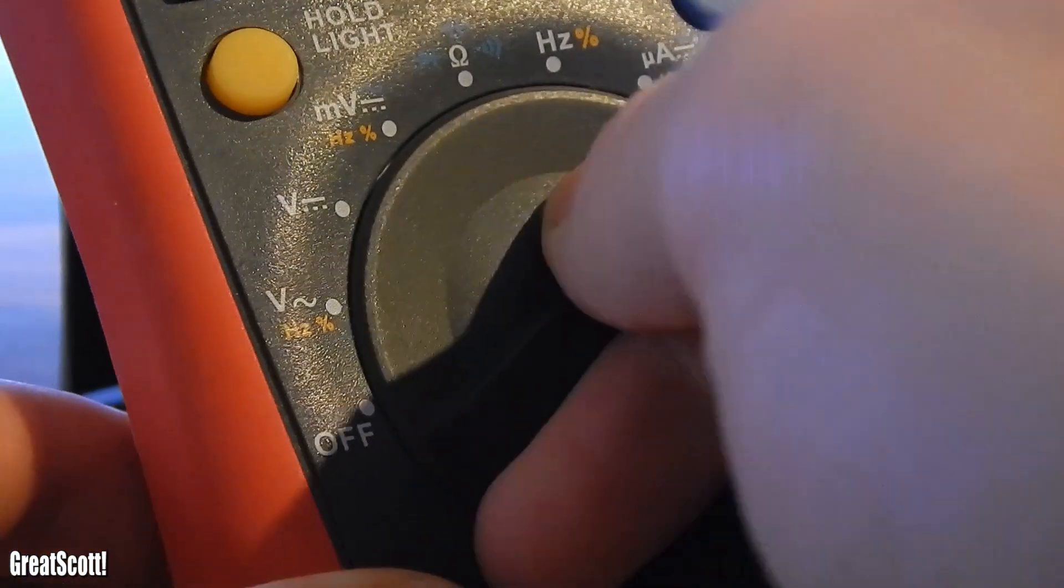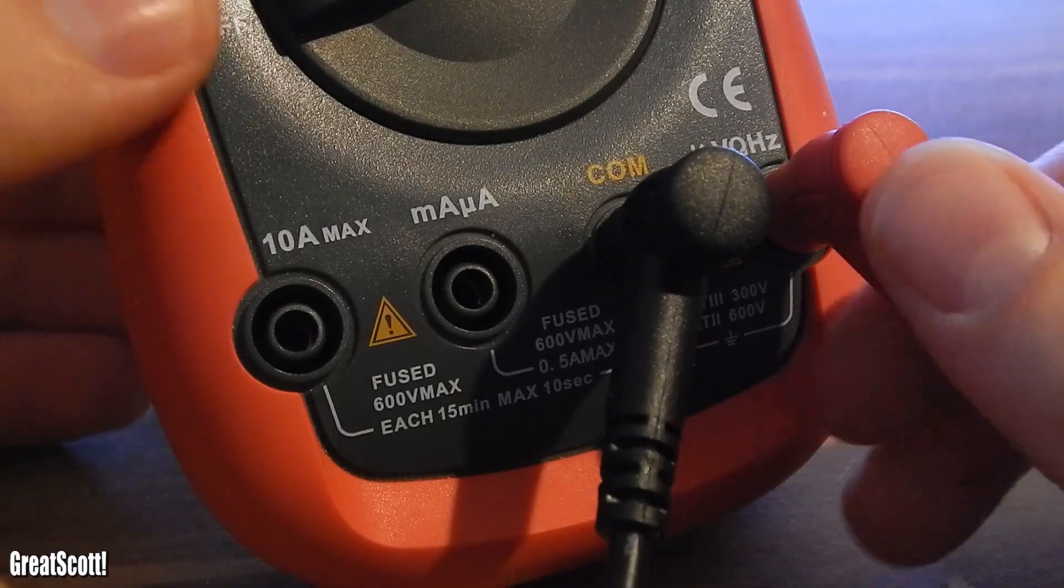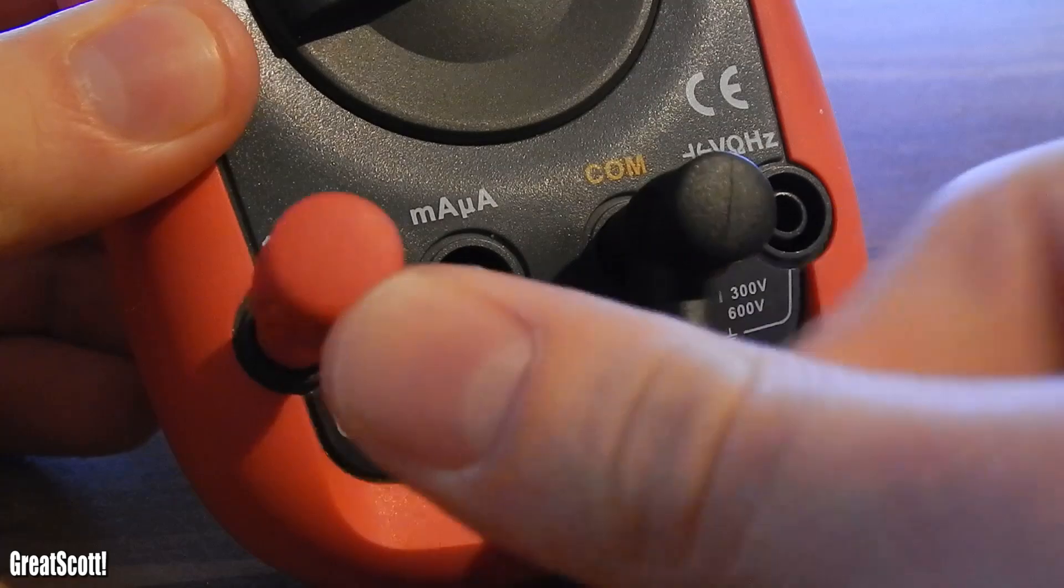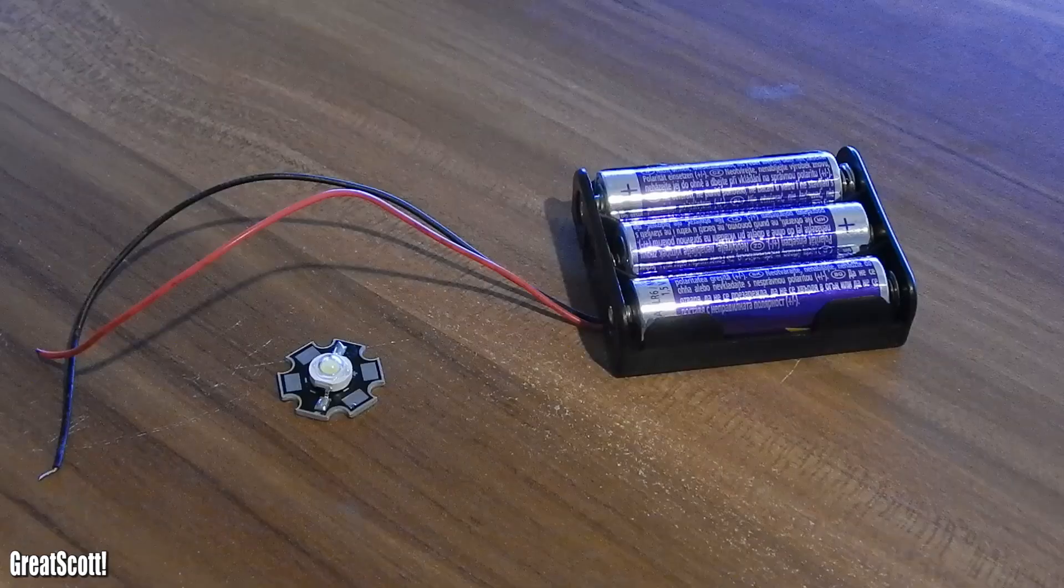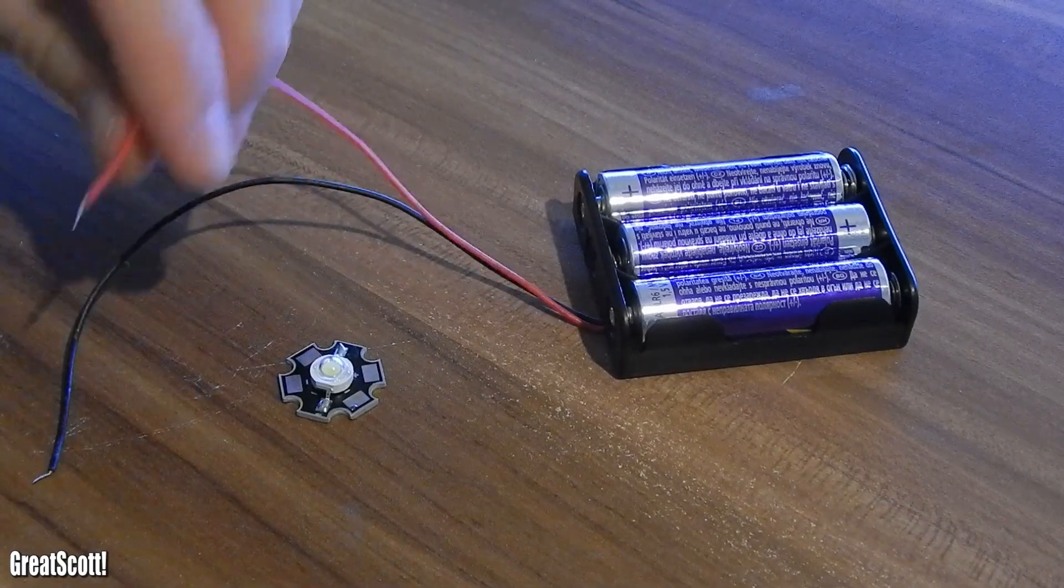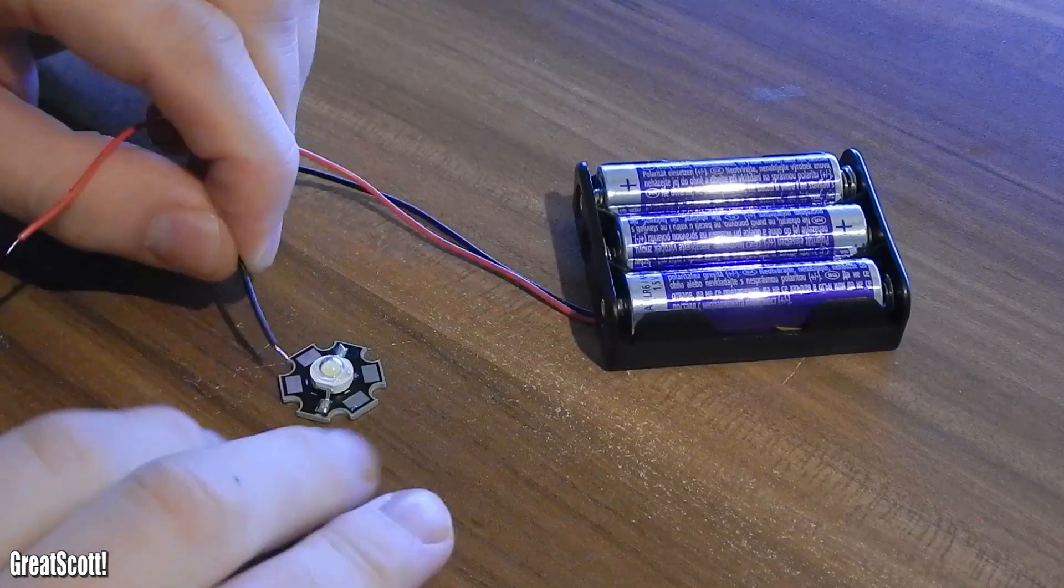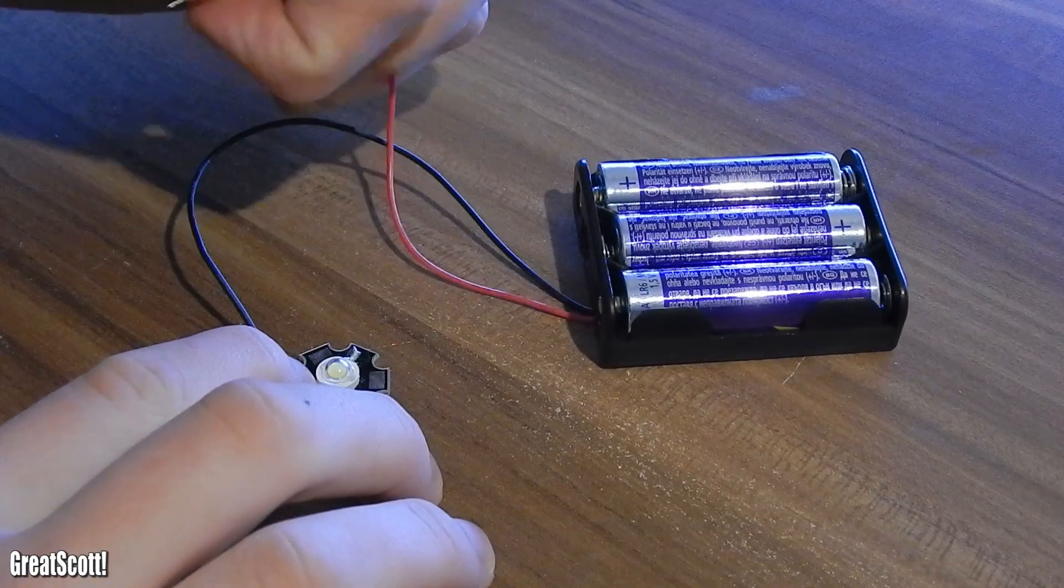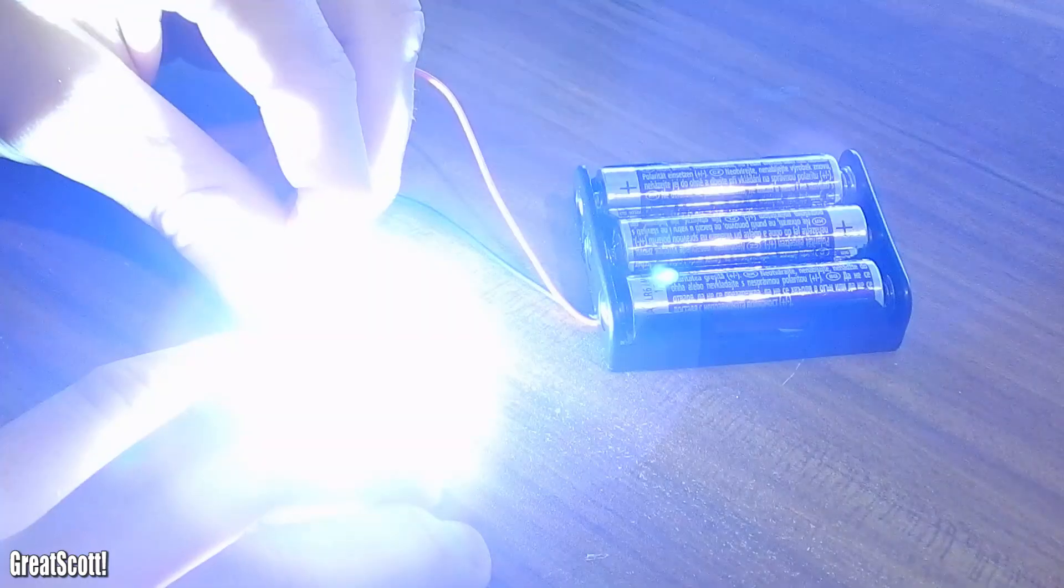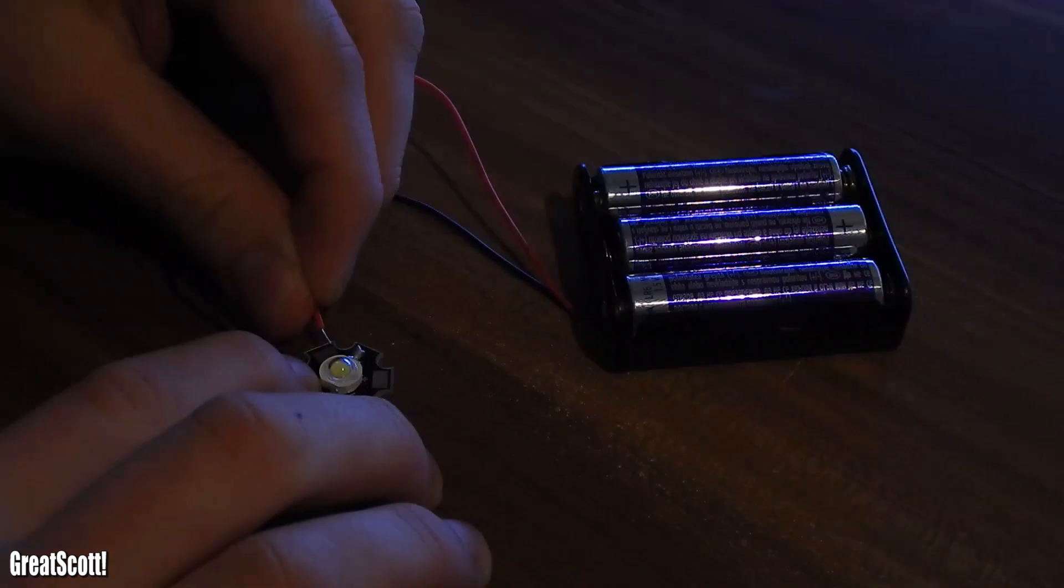Measuring current is the hardest part. But still easy. Let's only take a look at DC. Switch the red probe to the 10A socket. Why 10A? Always start with the high current socket. Cause the other socket can only endure up to 500mA. The fuse is gonna blow up when you try to measure higher current.